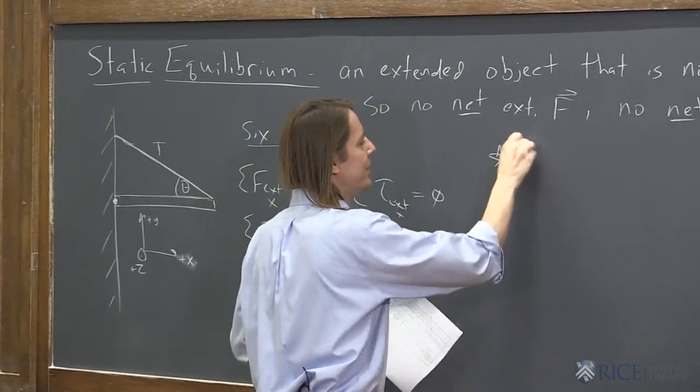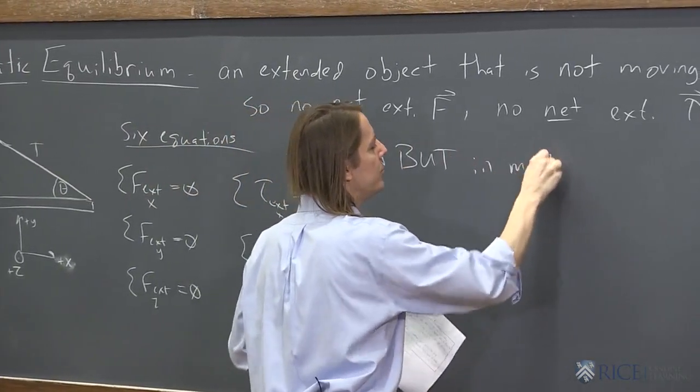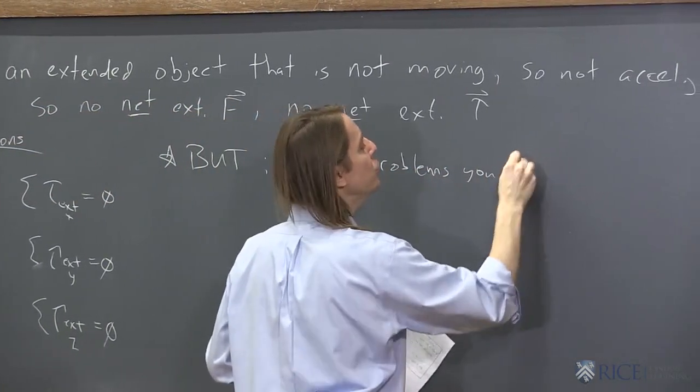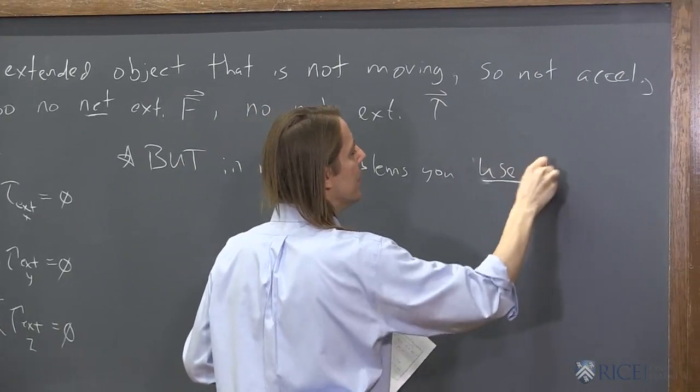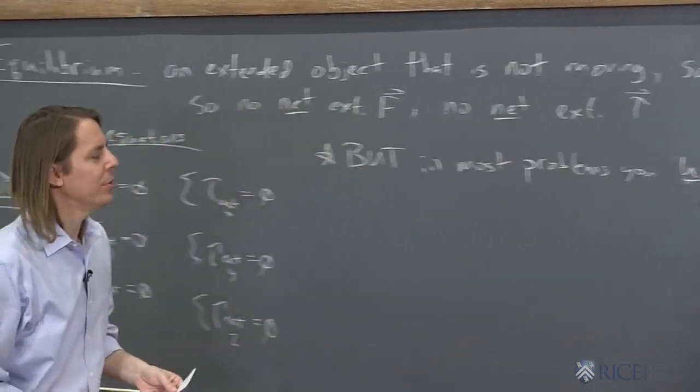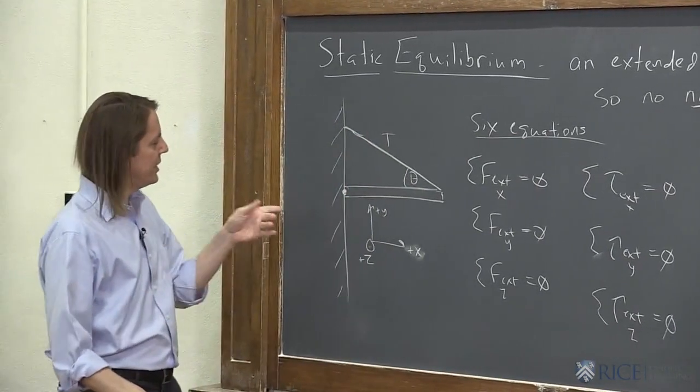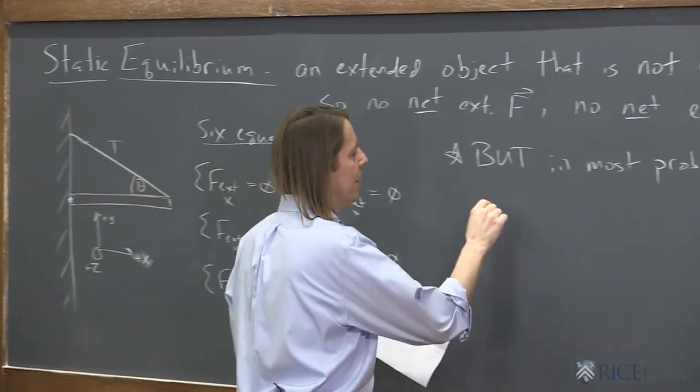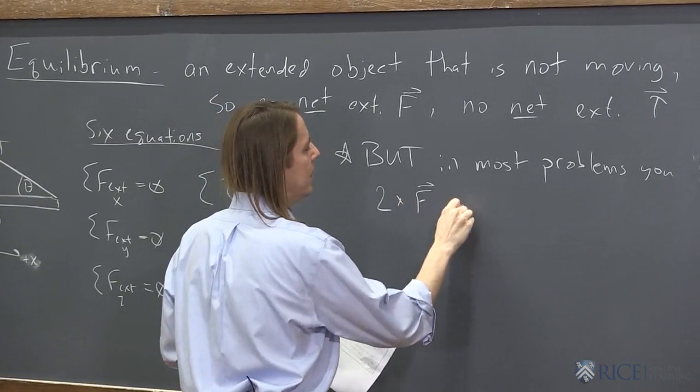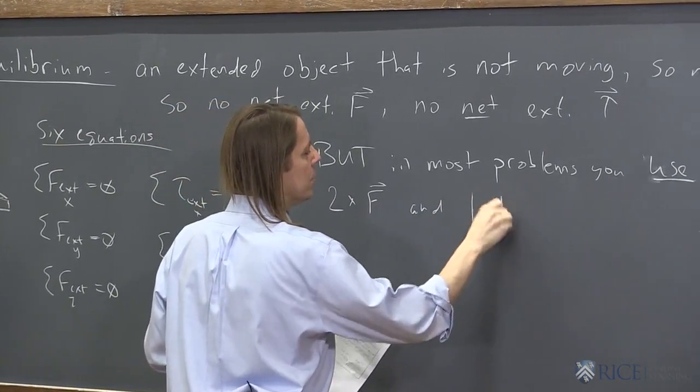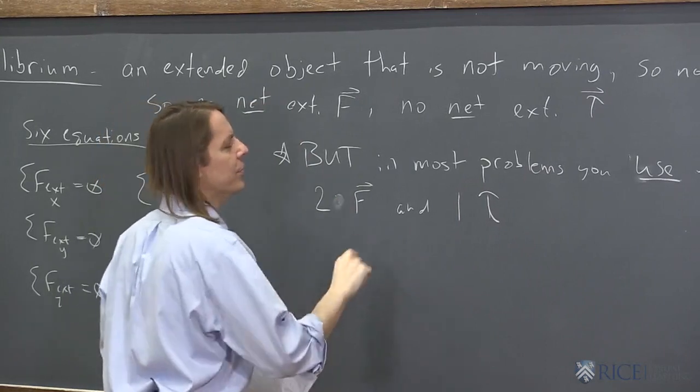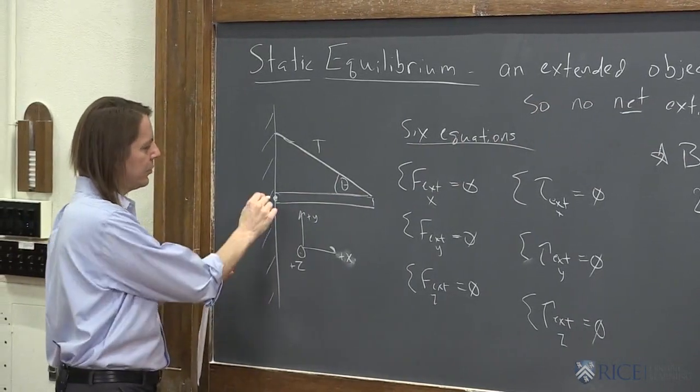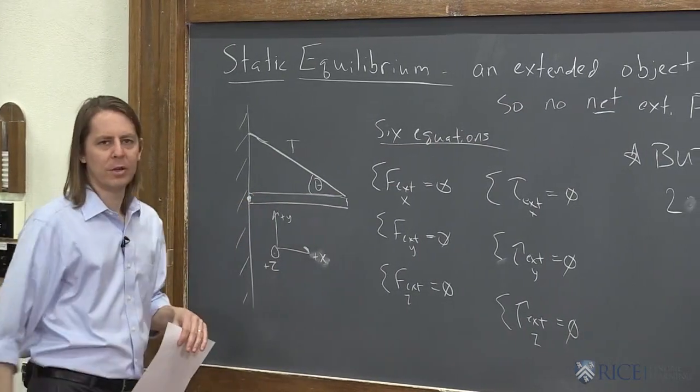But that sounds exciting to have six. But in most problems you use, I'll say, three. Because most problems are really thinking about the forces in a plane and the rotation around an axis perpendicular to that plane. That's what we're usually limited to. So usually we're limited to two forces and one torque. In this case, the torques would be around the z axis and the forces would be all the x and y components of the forces.